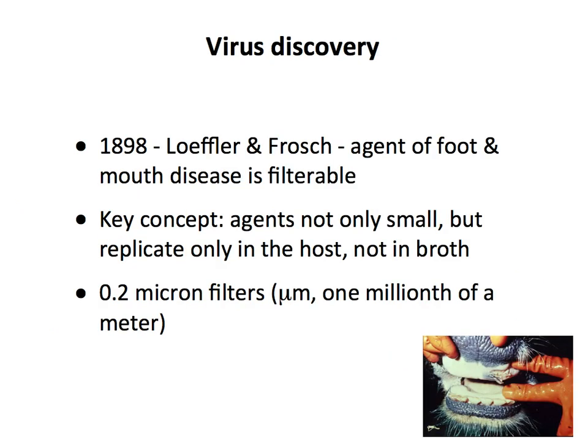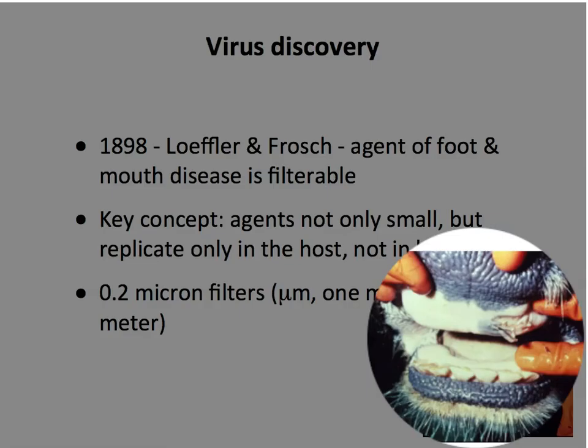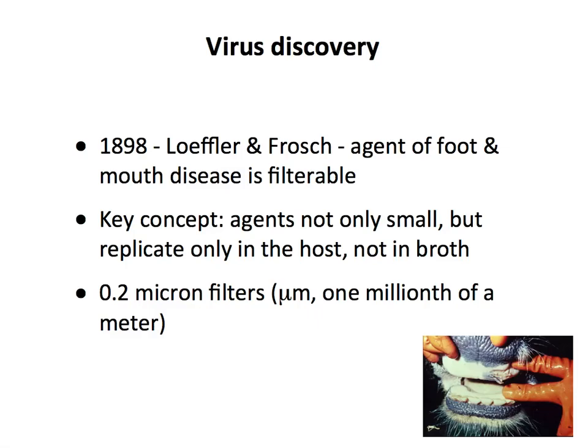The first animal virus was foot and mouth disease virus in 1898 — again demonstrated by the agent being filterable. The virus causes lesions in the mouths and on the feet of cattle, and those lesions contained filterable agents that caused disease. The key concepts: these were very small agents that passed through a 0.2-micron filter, and they would replicate only in a host, not in a broth like Pasteur's and Koch's bacteria. That is what distinguished these agents from everything else known.